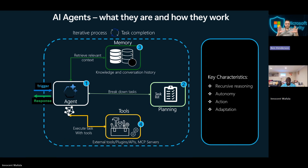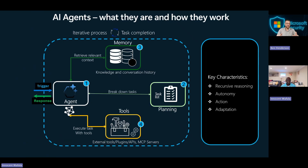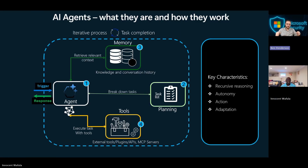That's such a great graphic, and it's such a great way to view agents — the iterative process of task completion that's learning for our customers and businesses 24 hours a day. It's a constant process. What is driving this shift right now from your perspective? You have a view into all of Microsoft. What's driving this shift to AI agents?